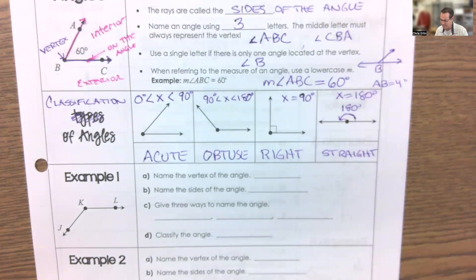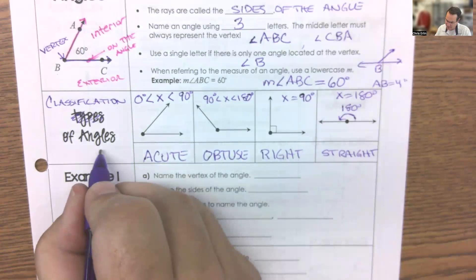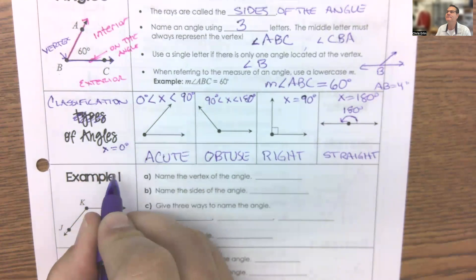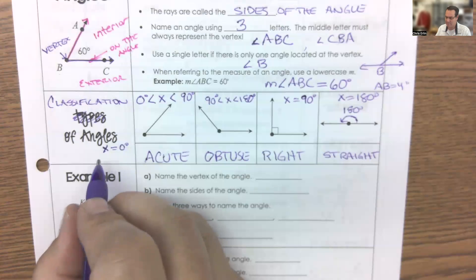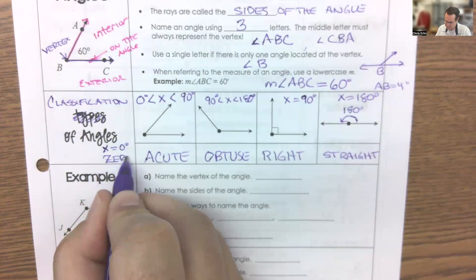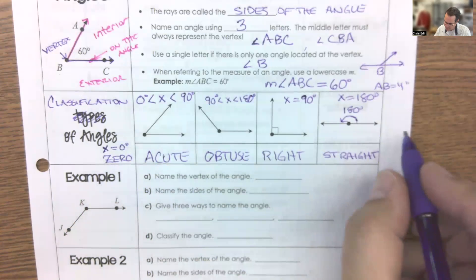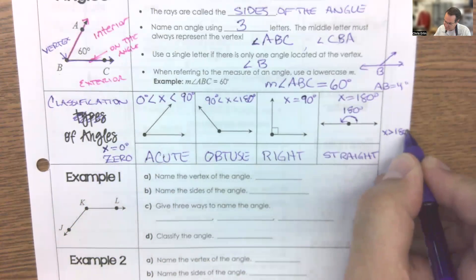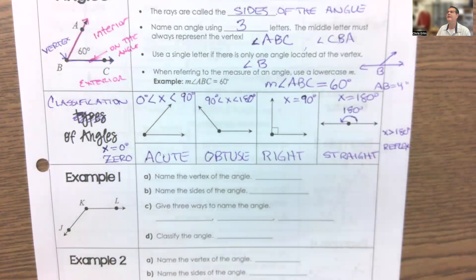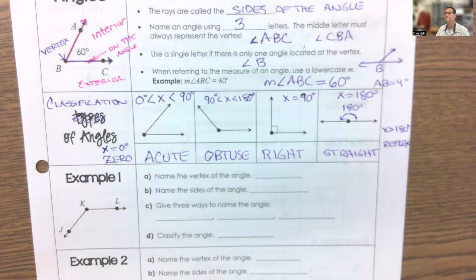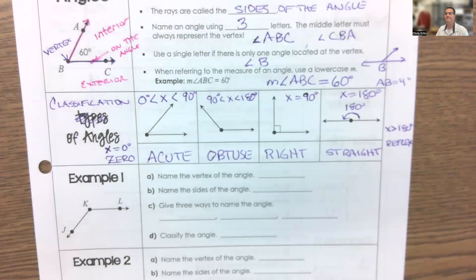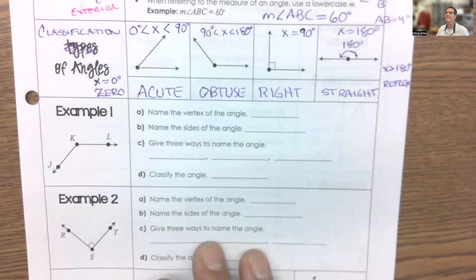Now, we're going to add in two more that don't fit with these pictures. One over here is what if X is equal to exactly zero degrees? Any guesses what we call that angle? A zero angle. And then over here, if it's greater than 180 degrees, that's called a reflex. R-E-F-L-E-X. Any questions on classifying angles?